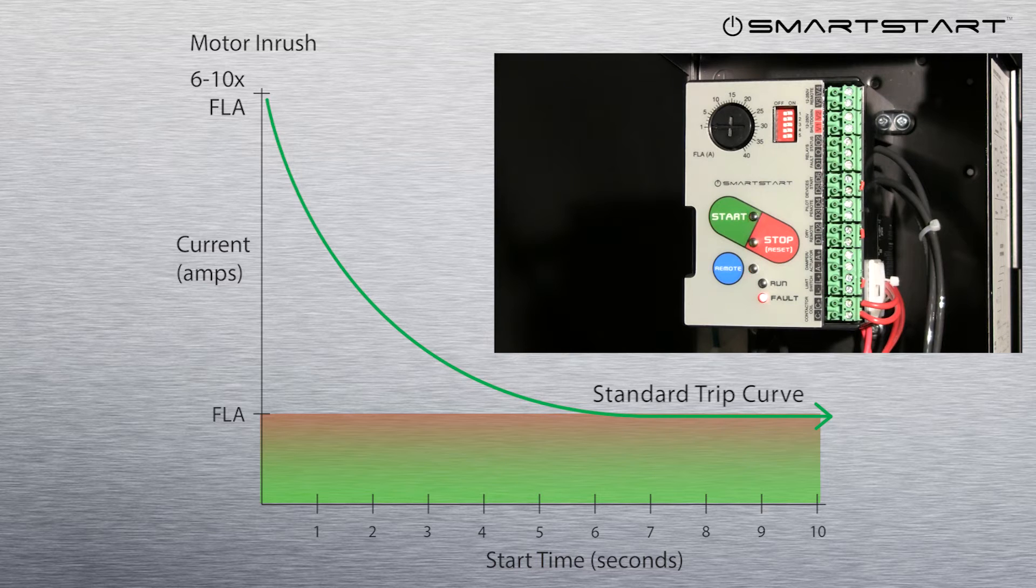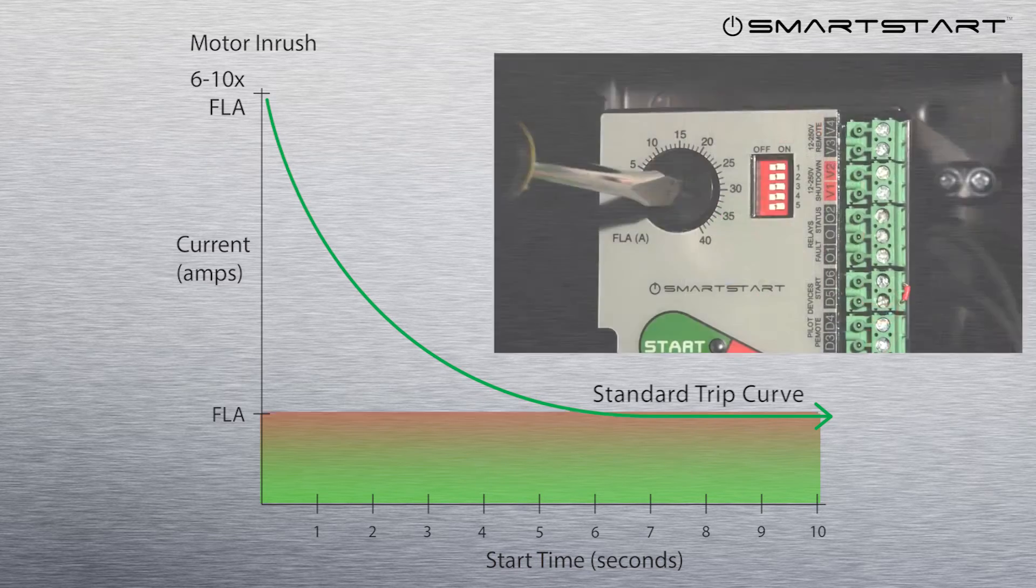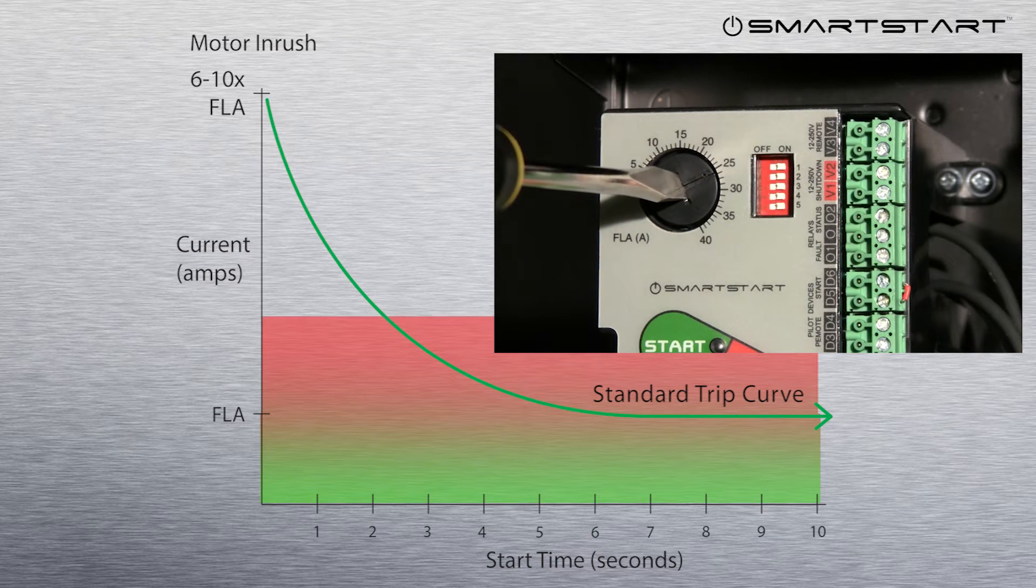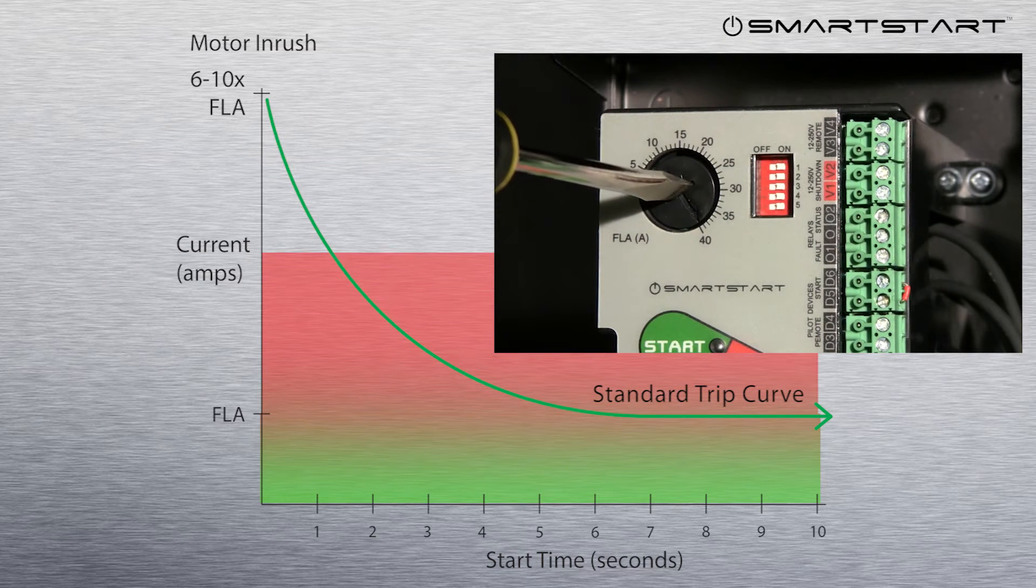If an installer doesn't set the overload amperage correctly, you're still covered. And if an operator tries to overcome motor jams or problems by jacking up the overload dial, you're protected.